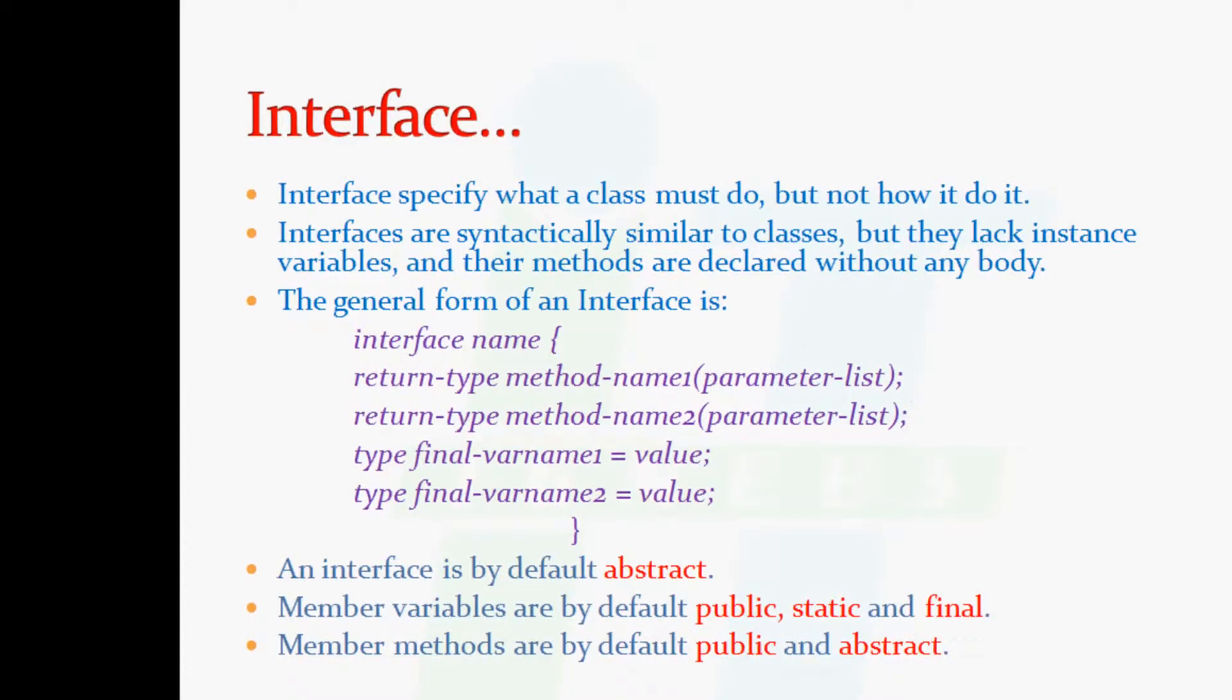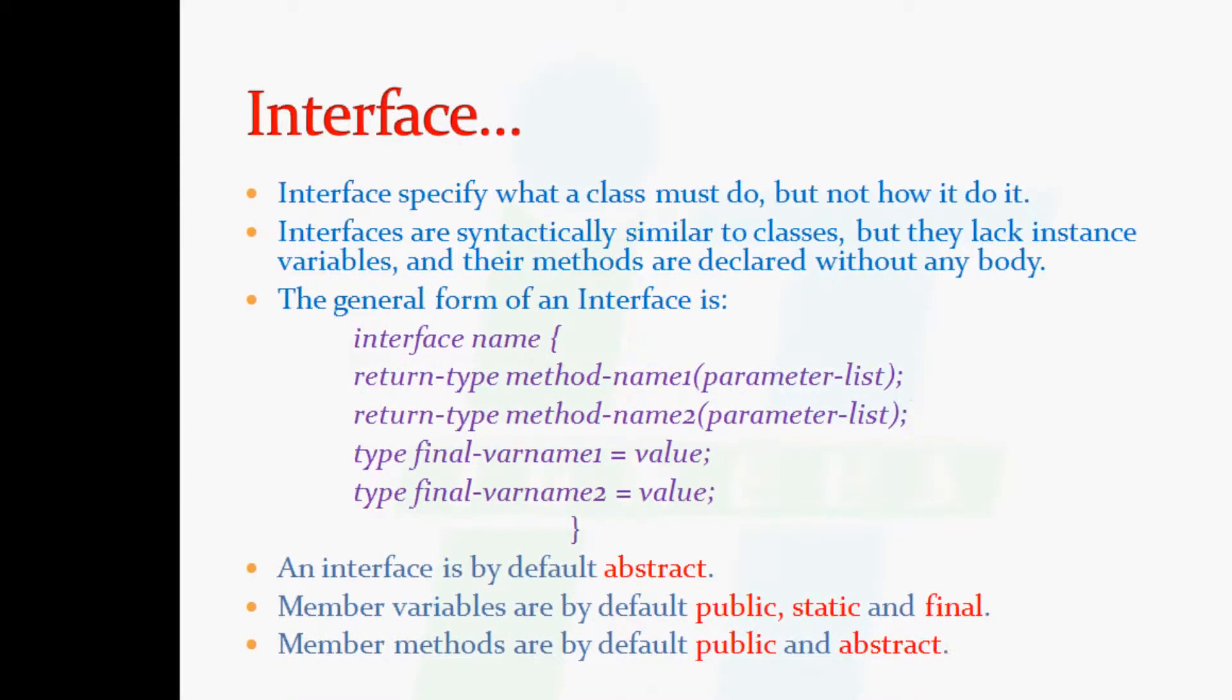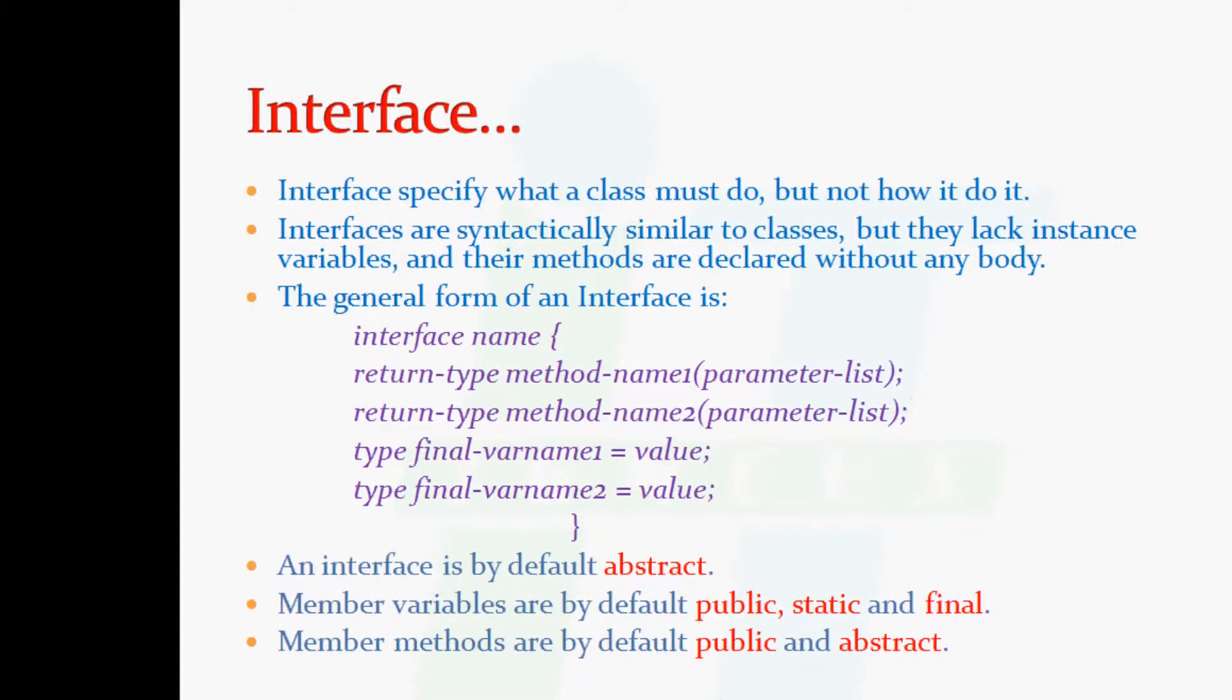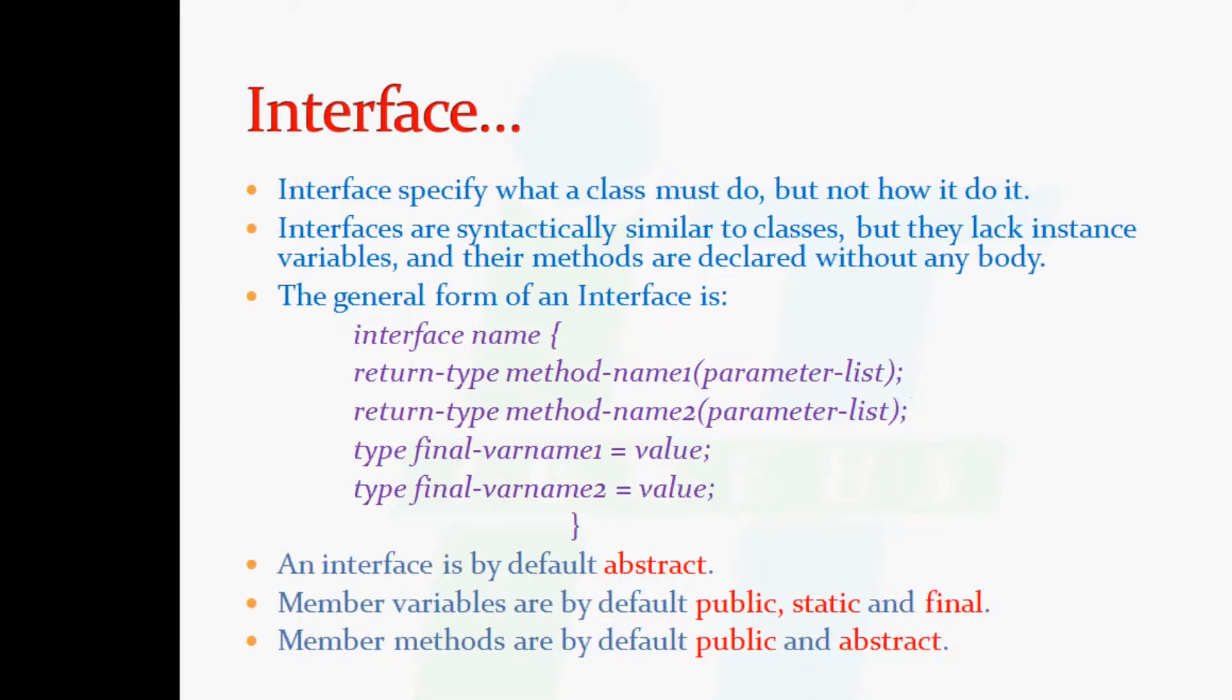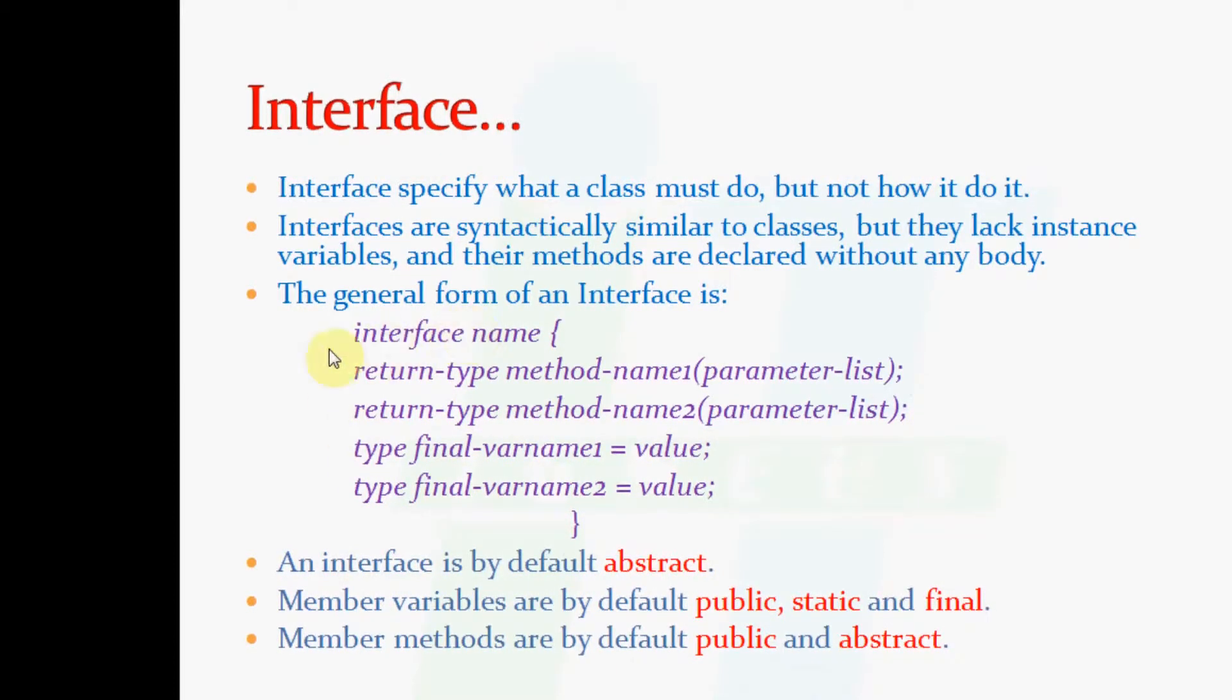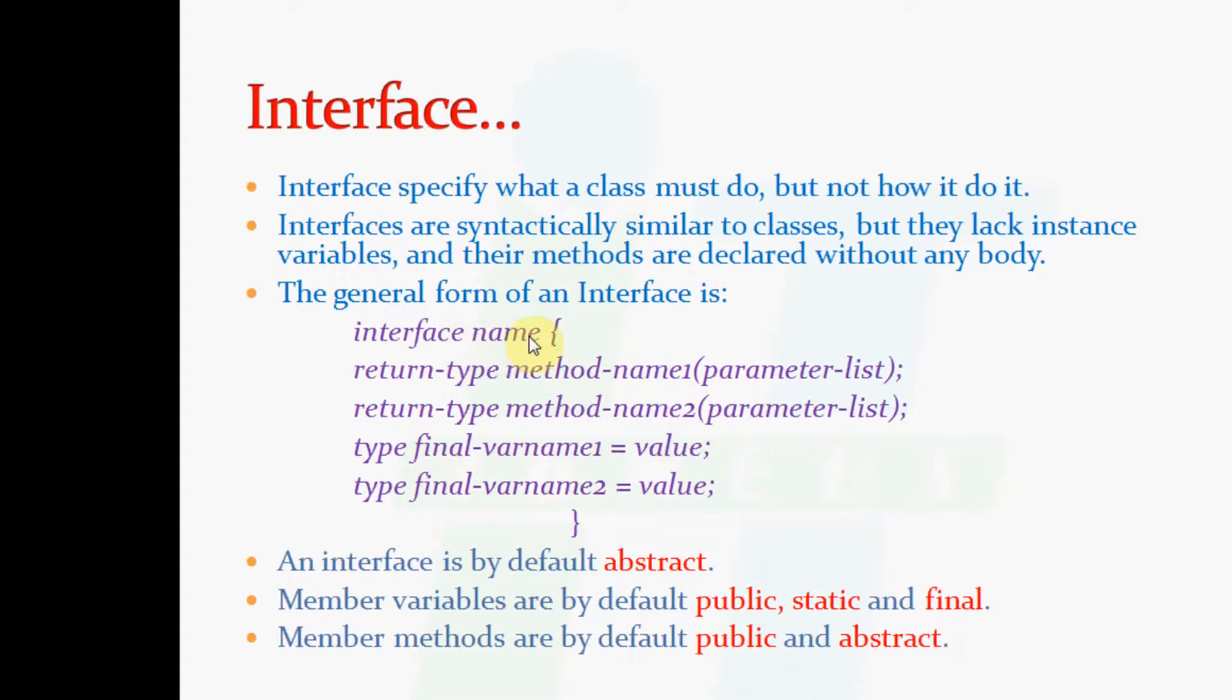Interfaces are syntactically similar to classes but they lack instance variables and their methods are declared without any body. The general form of an interface is the interface keyword, then the interface name,